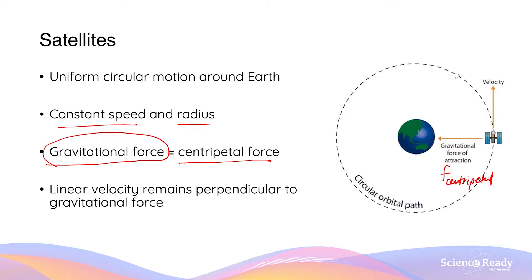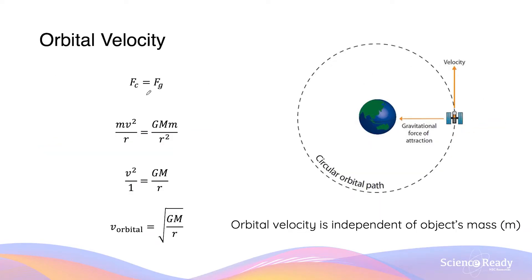While the satellite is undergoing uniform circular motion, it's important to remember that its linear velocity remains perpendicular to the gravitational force — this angle always remains 90 degrees. Since the gravitational force is the only force contributing towards the centripetal force, we can derive an expression for the velocity of the satellite by equating the expressions of the two forces.